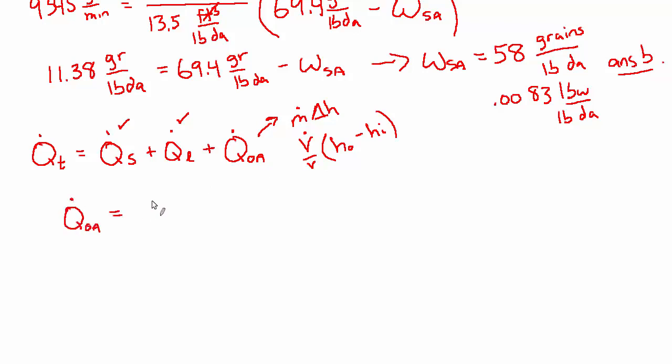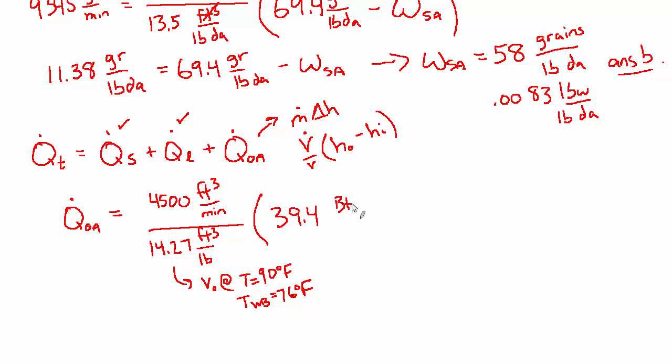So let's calculate this bit. Q dot outside air equals 4500 CFM, I'll write it as cubic feet per minute so we can see the units cancel, divided by the specific volume at the outside air condition, which is 14.27 cubic feet per pound. And I'm pulling that from the psychrometric chart or from a psychrometric calculator, whichever is easier for you. The specific volume of the outside at T equals 90 degrees and a wet bulb equals 76 degrees. And that's being multiplied by the difference in enthalpies. 39.4 BTU per pound is the enthalpy outside, again associated with these same conditions here, minus the enthalpy in the room, which is 29.3 BTU per pound. And that's associated with the room conditions.